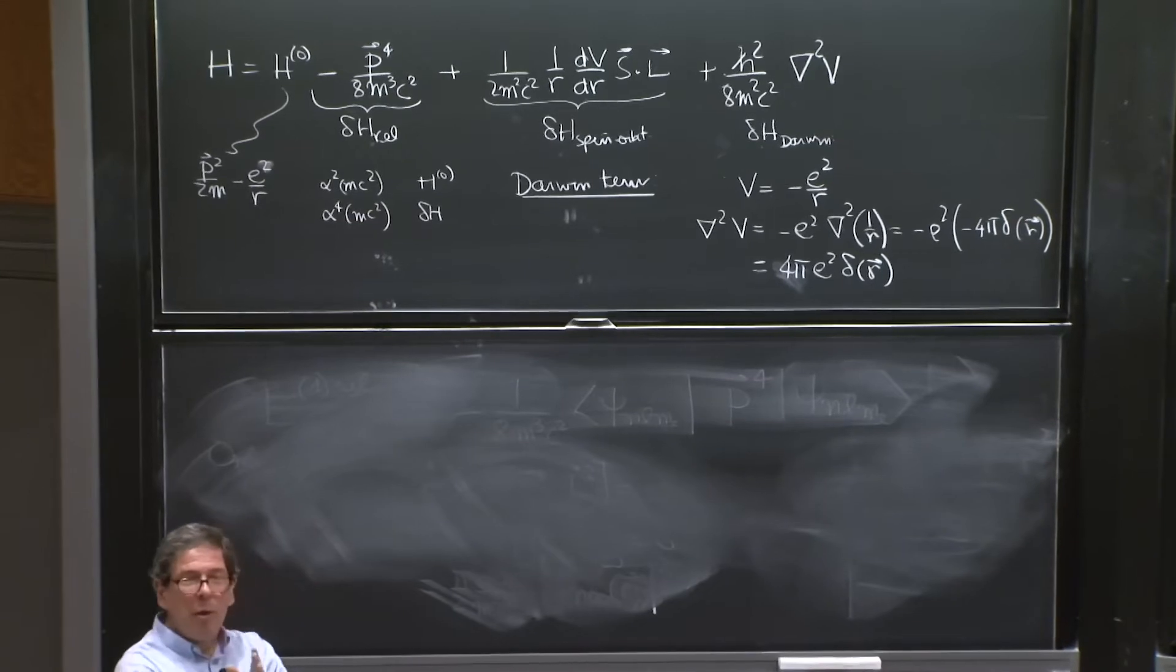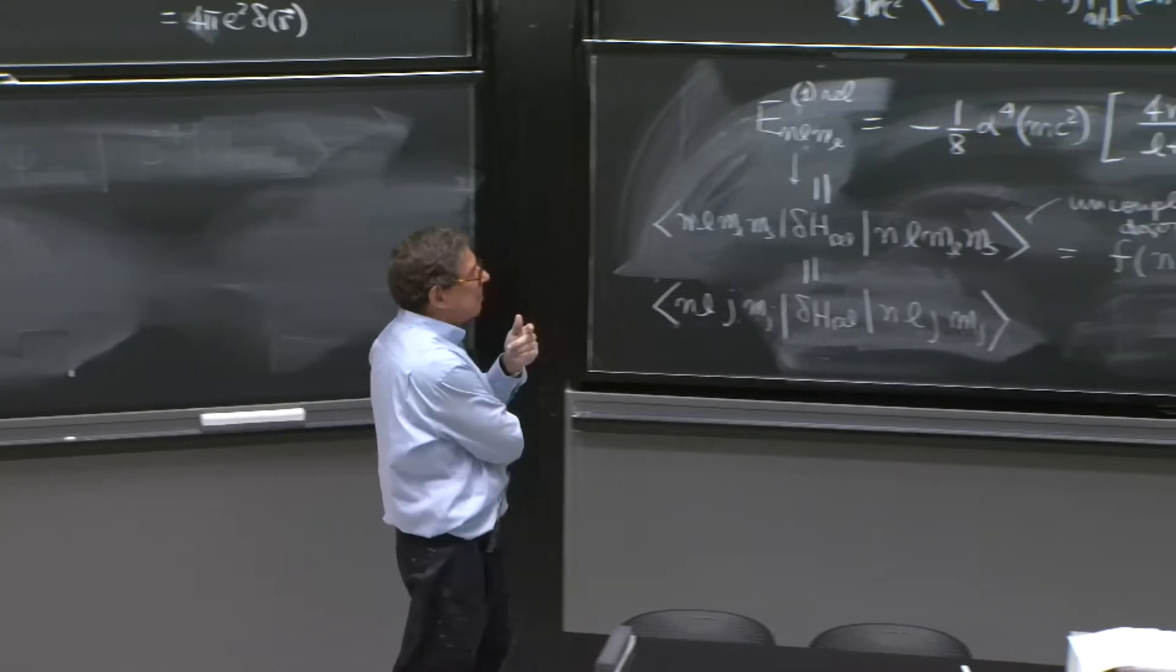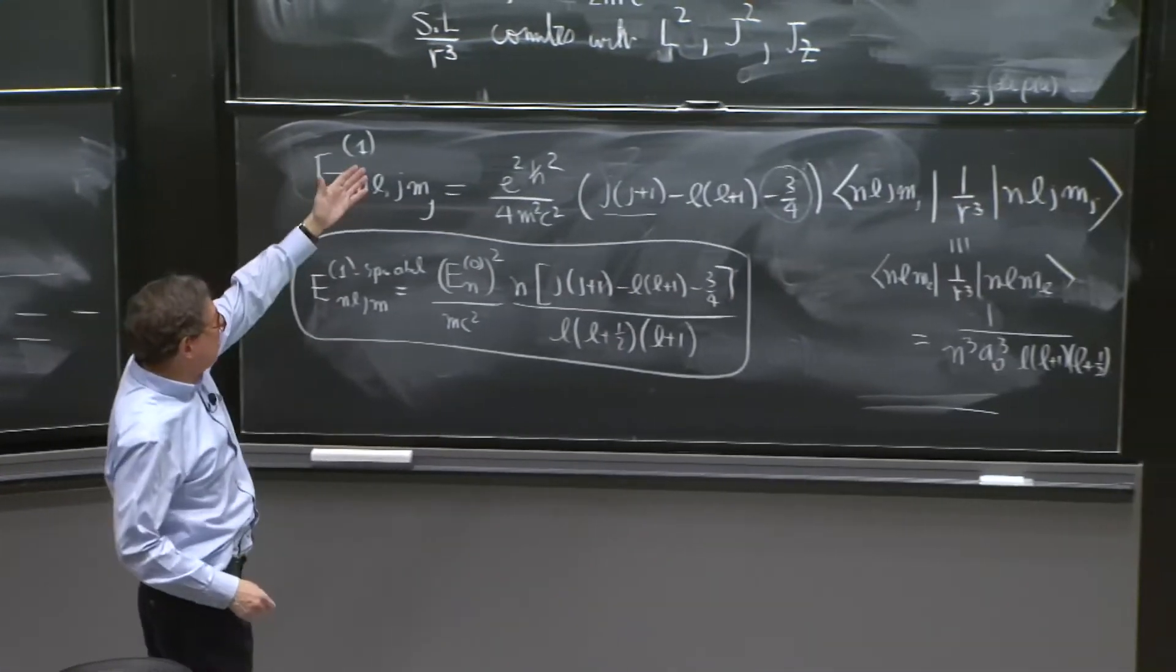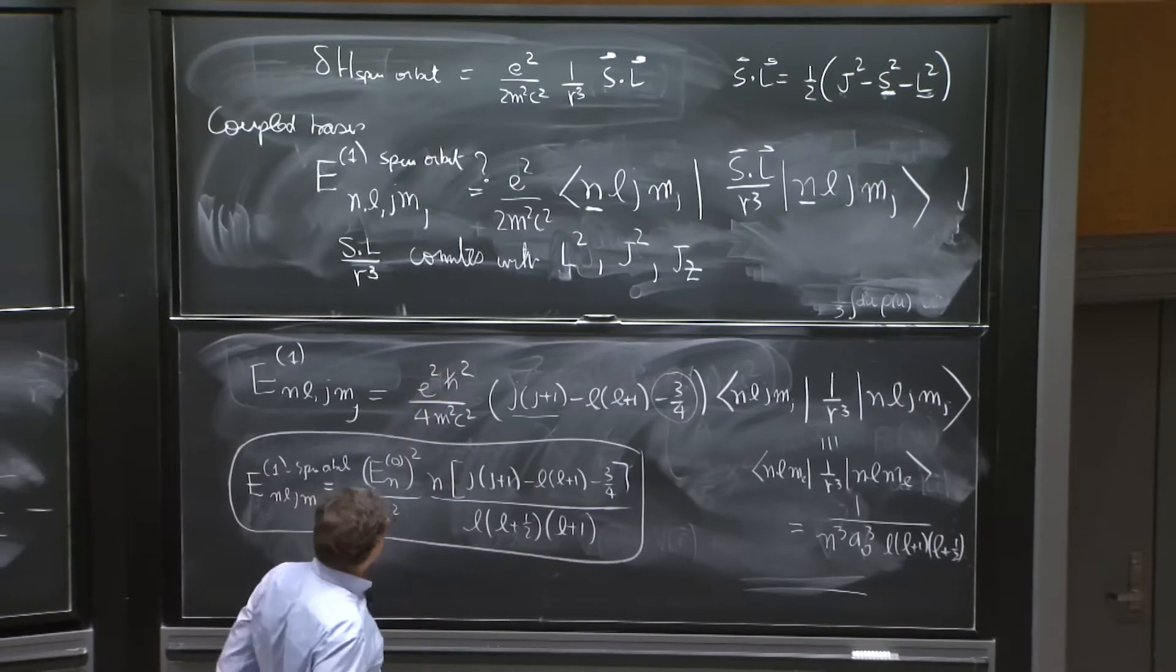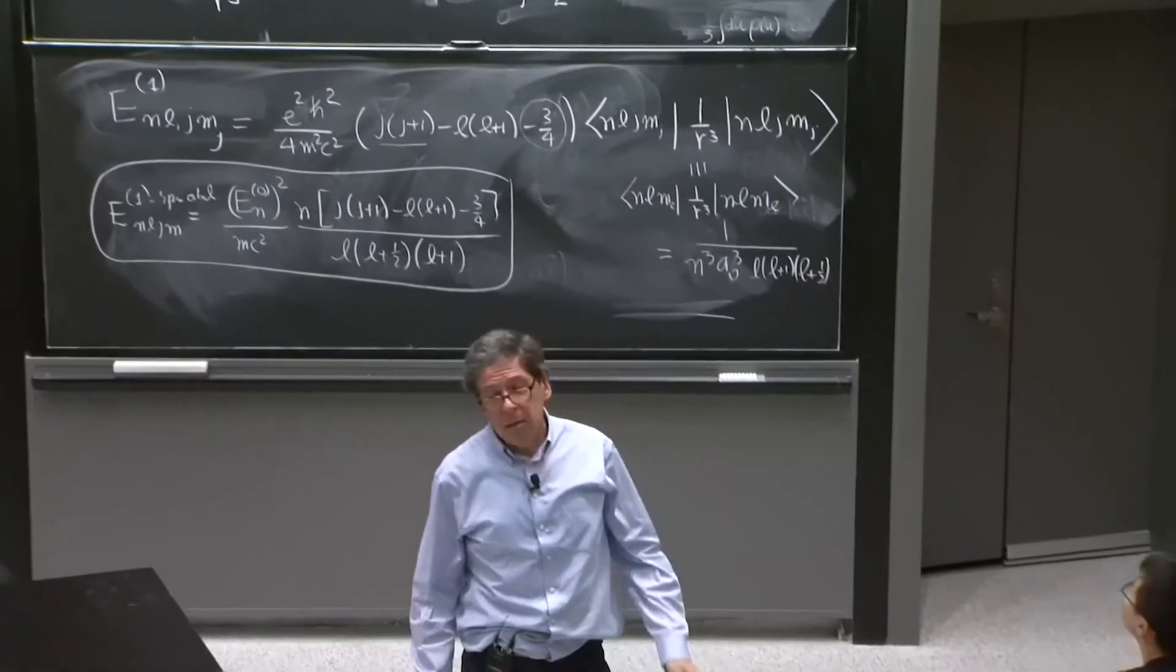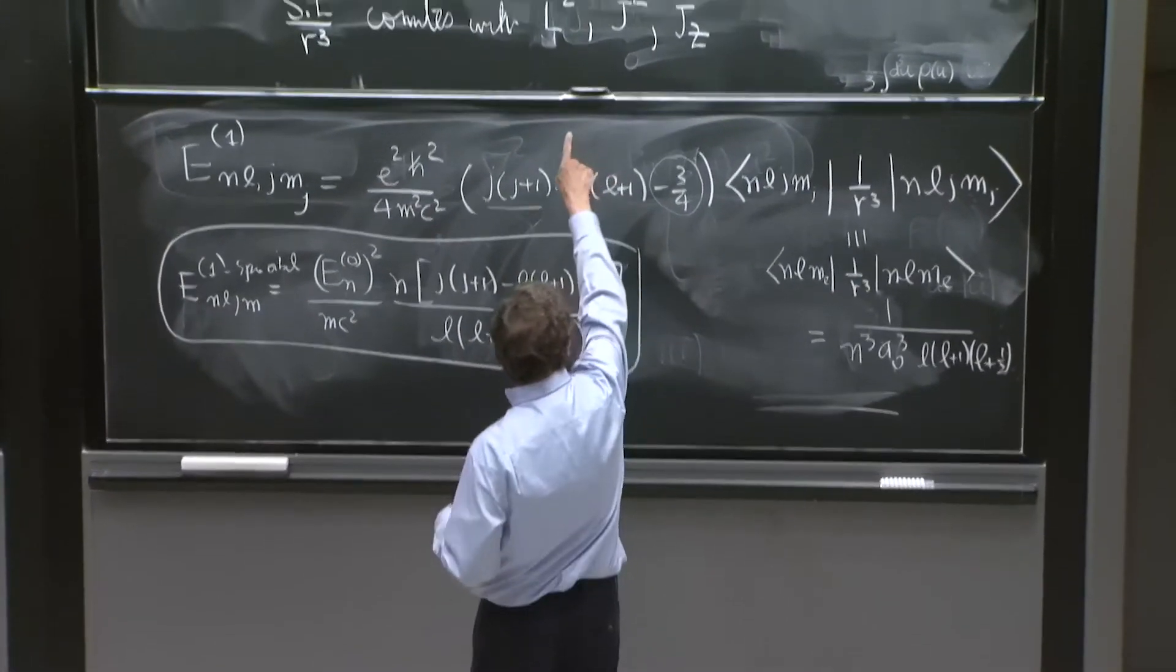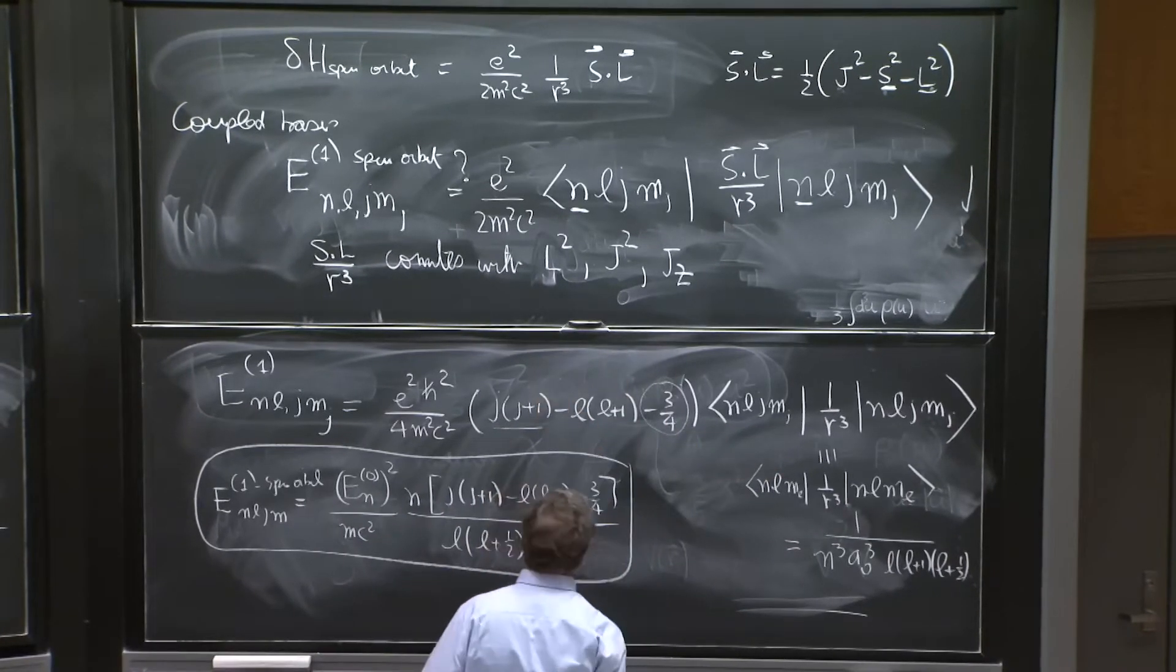So we saw the Darwin term only affects l equals 0. On the other hand, spin orbit really requires s dot l, and the state should be acted on trivially by l. If all your states are singlets, l gives 0 on them. So actually, you have a little bit of an uncomfortable situation. Because l, acting on l equals 0 states, will give you 0. But you still have the 1 over r cubed.